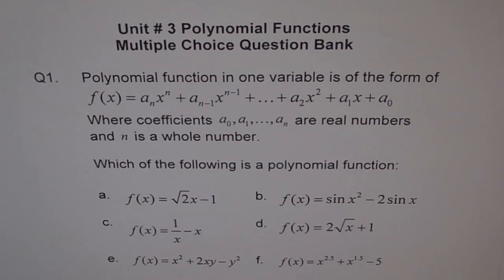Polynomial function in one variable is of the form f(x) = aₙxⁿ + aₙ₋₁xⁿ⁻¹ + ... + a₁x + a₀, where coefficients a₀, a₁, ..., aₙ are real numbers and n is a whole number. That is the definition of the polynomial functions which we are dealing with here. Remember, these are one variable polynomial functions.